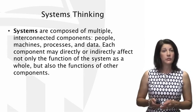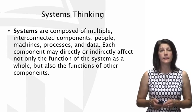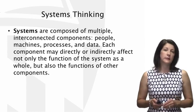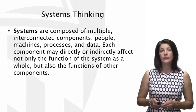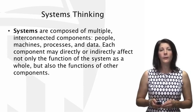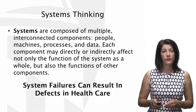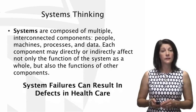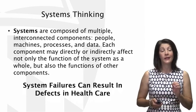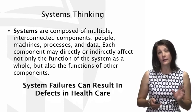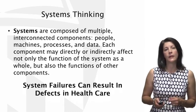Systems are composed of multiple interconnected components: people, machines, processes, and data. Systems thinking holds that each component may directly or indirectly affect not only the function of the system as a whole, but also the functions of the other components. System failures can result in defects in health care. Failures within any component of the complex system can actually exacerbate or worsen functioning of the system as a whole.